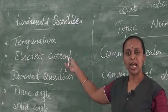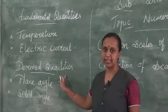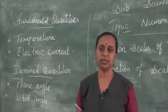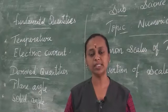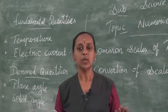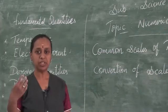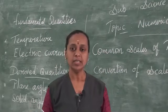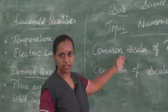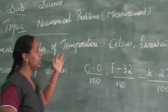We also studied about amount of substance, luminous intensity, and so on. The derived quantities include plane angle and solid angle. Temperature is nothing but the degree of hotness or coolness of a body — you can identify which object is cool and which is hot. Temperature is measured by an instrument called a thermometer. When you go to the doctor to measure your body temperature, they use thermometers. These thermometers have common scales used to measure temperature.